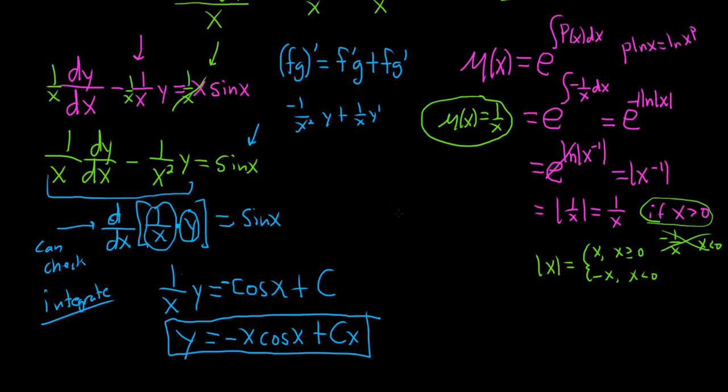The question wants to know what the transient terms are. So transient terms are terms that approach 0 when x approaches infinity. Well, nothing here is going to approach 0. Cx will approach infinity, and this limit here won't even exist because cosine oscillates. So there are none.